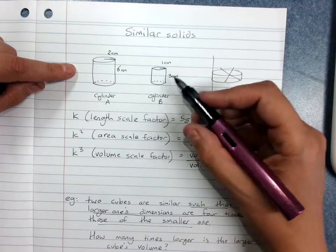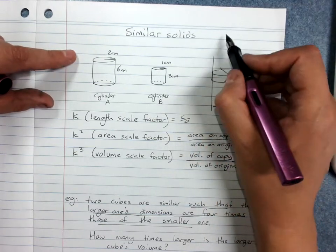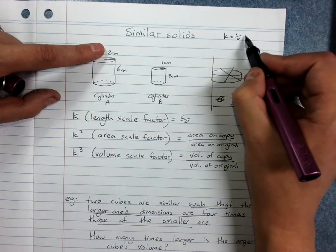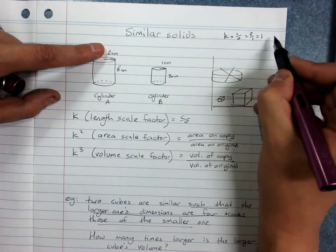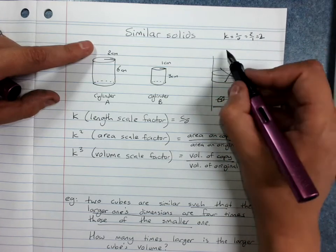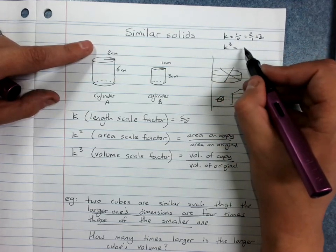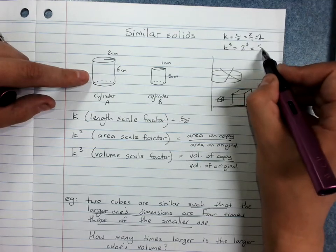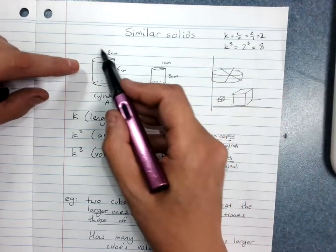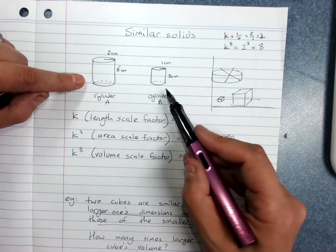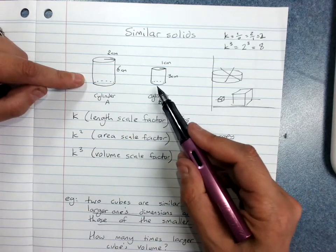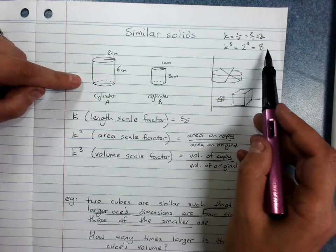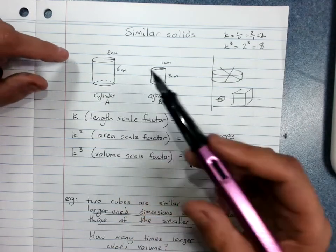If I was finding for this one, k, copy over original, 2 over 1 is 2. K is 2, so k cubed, the volume ratio will be 2 cubed, which is 8. That means this volume is 8 times the volume of the smaller one. If I told you the volume of the smaller one, you could then just multiply it by 8 to get the volume of the bigger one.